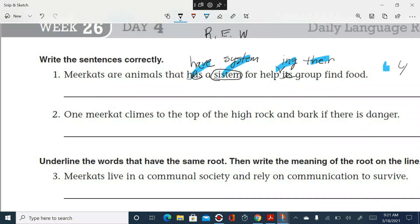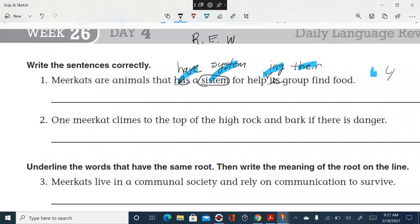All right, you ready? One meerkat climbs to the top of the high rock and bark if there is danger. Oh, my gosh. I see a spelling error. Huh? Yeah, I guess so. No, they bark probably. What do we got here? What are we doing? What are we doing? Yeah. Climbs should be spelled C-L-I-M-B-S.